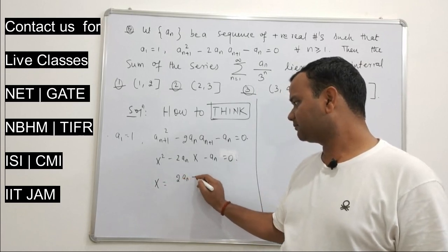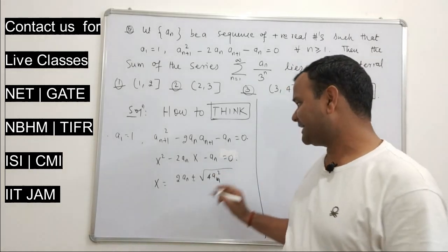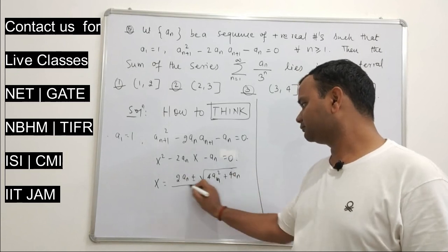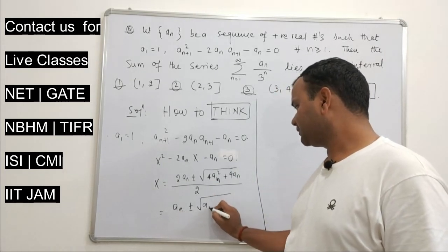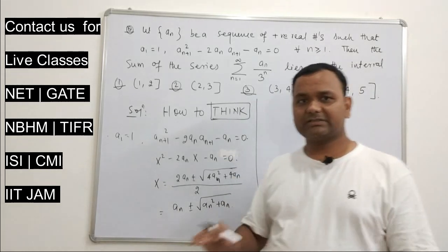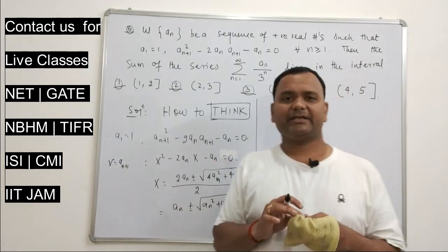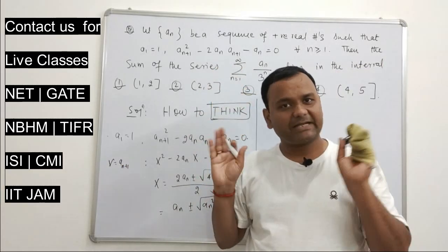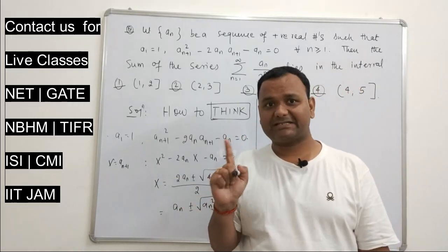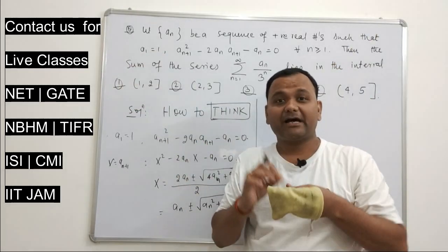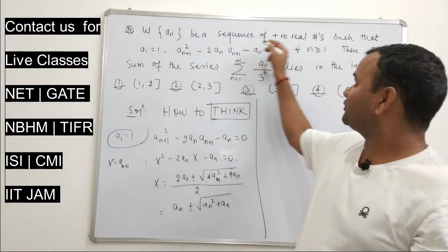Look at this as a quadratic expression in aₙ₊₁: using the quadratic formula b ± √(b² − 4ac) / 2, this gives aₙ₊₁ = aₙ ± √(aₙ² + aₙ). So you are treating aₙ₊₁ as the variable x and solving the recursion. You get two choices — plus or minus. Now an important question: which value do we take, plus or minus? This is determined by the initial condition, and they have told us this is a positive real sequence.